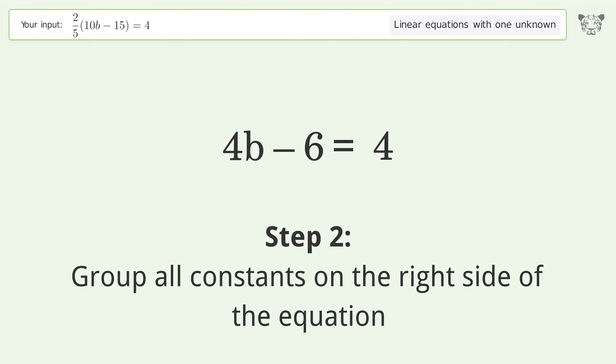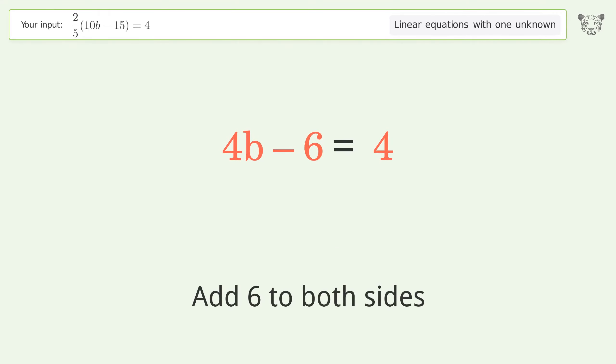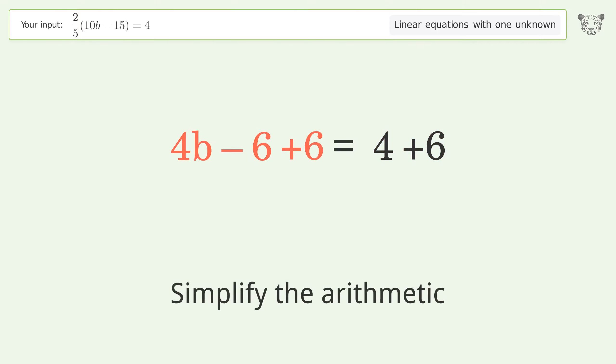Group all constants on the right side of the equation. Add 6 to both sides. Simplify the arithmetic.